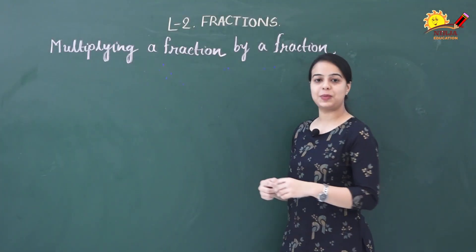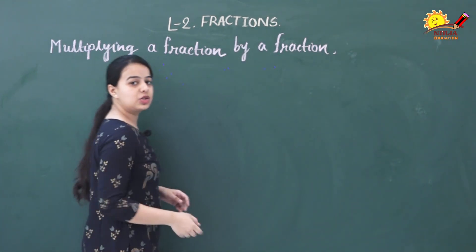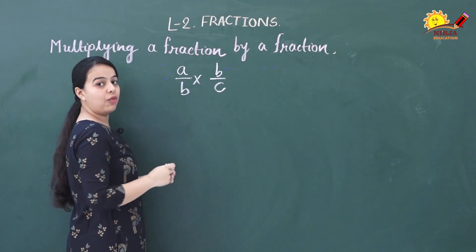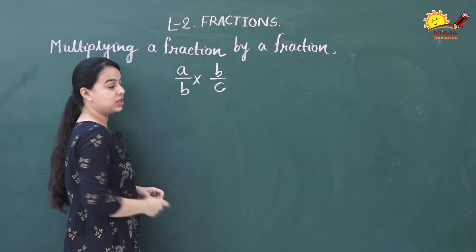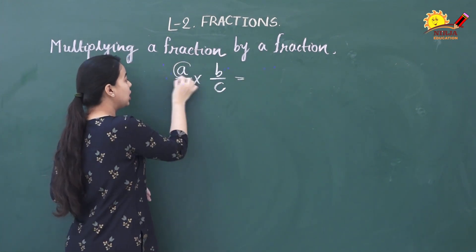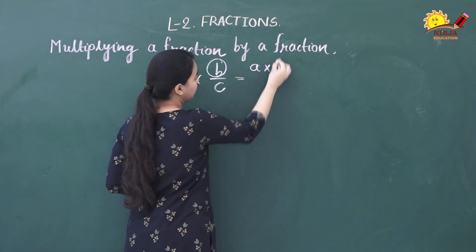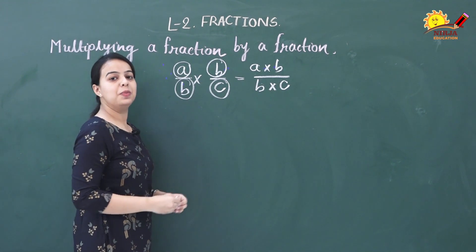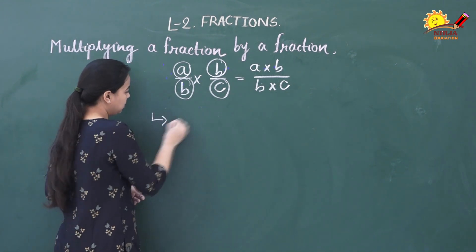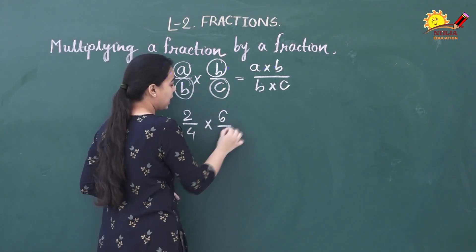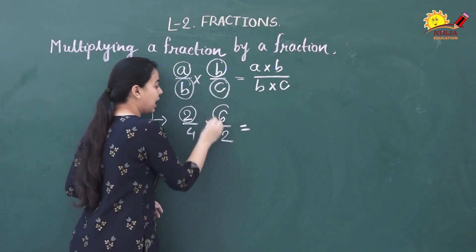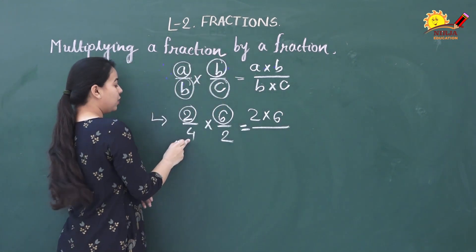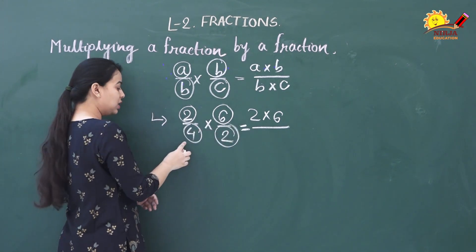Now let us see how to multiply a fraction by a fraction. Let us take a/b multiplied by b/c. This is one fraction, this is another. To multiply a fraction with another fraction, you need to multiply the numerator by the numerator and multiply the denominator by the denominator. Now let us take another example: 2/4 multiplied by 6/2. We need to multiply numerator with numerator, that means 2 multiplied by 6, and in the denominator, 4 multiplied by 2.